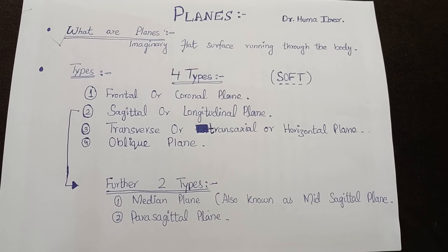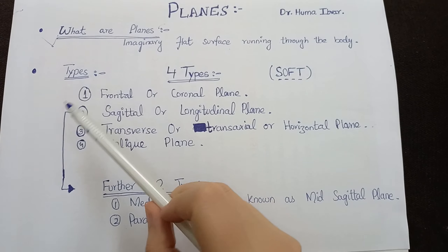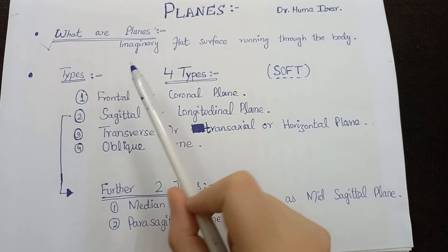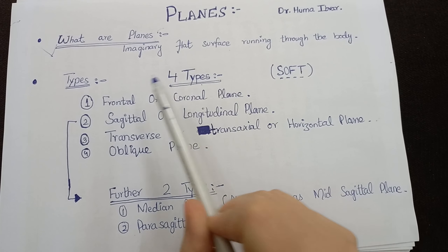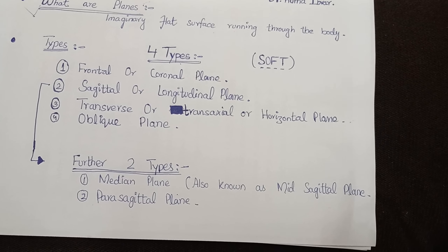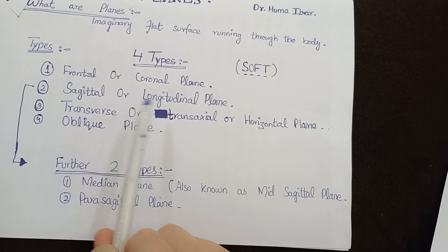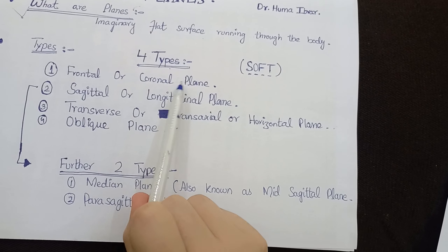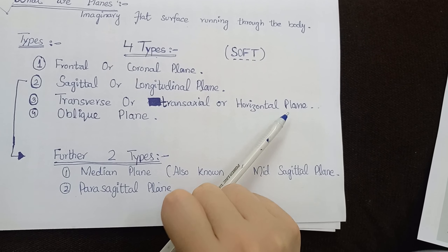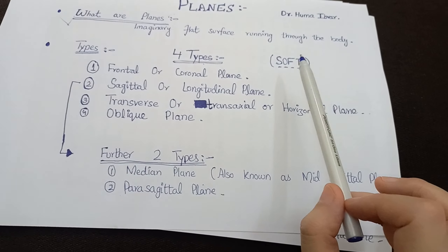So let's learn about planes. What are planes? Planes are imaginary flat surfaces running through the body, and there are four types of planes. Remember it with the mnemonic SOFT: S for sagittal or longitudinal plane, O for oblique plane, F for frontal or coronal plane, and T for transverse, transaxial, or horizontal plane. So there are four types of planes — remember it with SOFT.